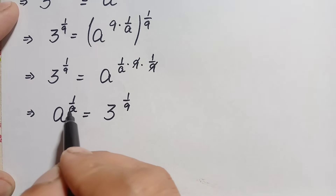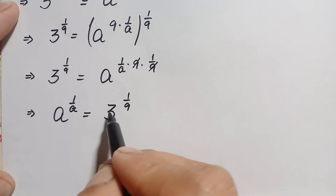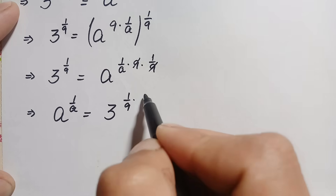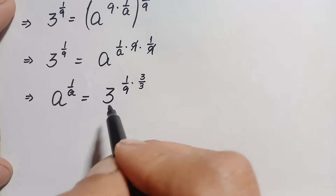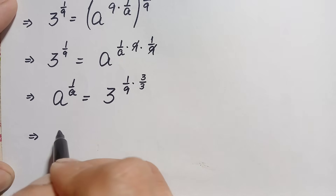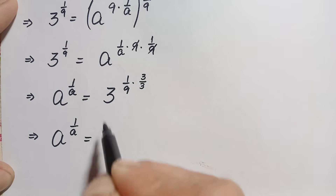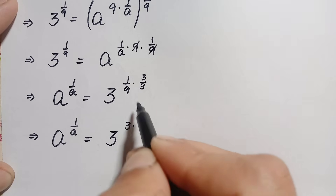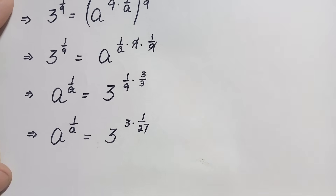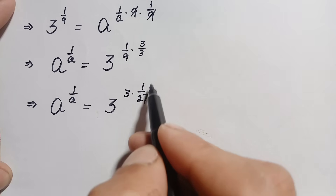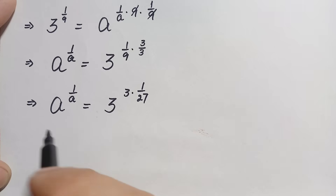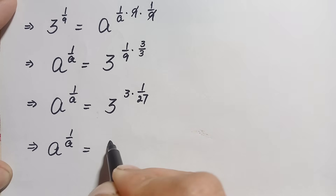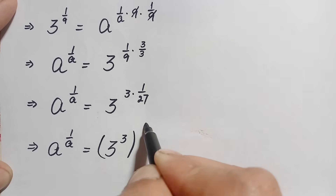Since the base and the denominator values need to match on both sides, we multiply and divide by 3 in the exponent. So the right hand side becomes 3^(3 × (1/9)), and since 9 × 3 = 27, this gives 3^(3/27) = 3^(1/9). Using the exponential identity, we write this as (3^3)^(1/27), which is 27^(1/27).